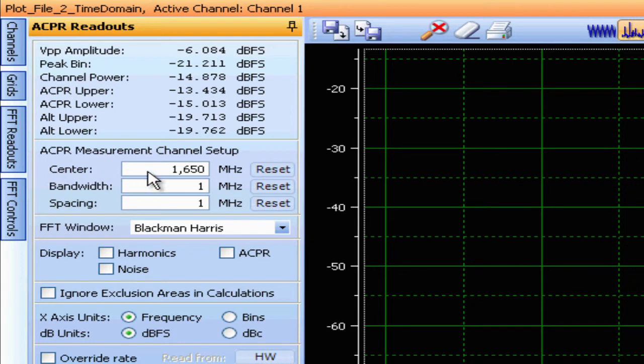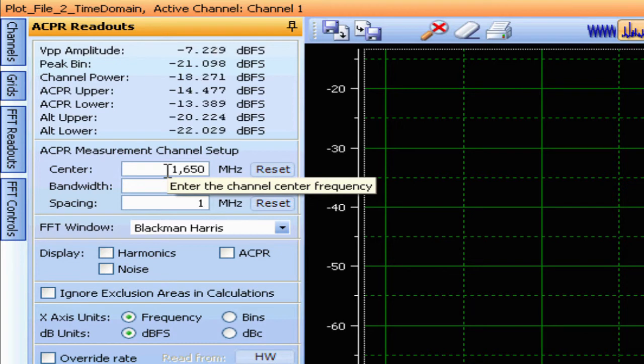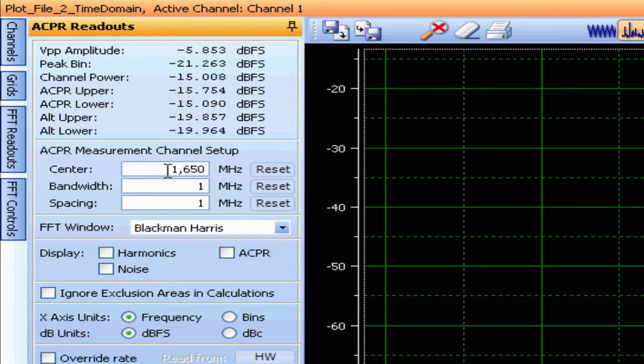So first of all we need to set up the parameters for the channels. So the ACPR is going to be centered at 1650 MHz. And the reason for that is because the ADC is sampling at 3.6 gig. So the 1950 MHz input signal folded back down to 1650 MHz. Then we're going to set up the bandwidth to be 3.84 MHz.